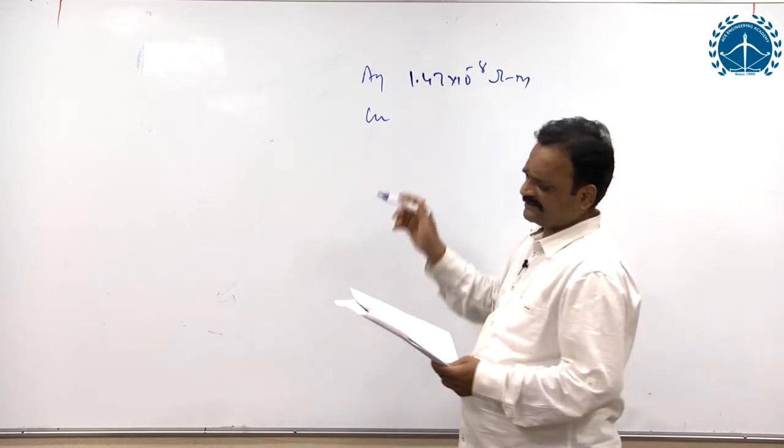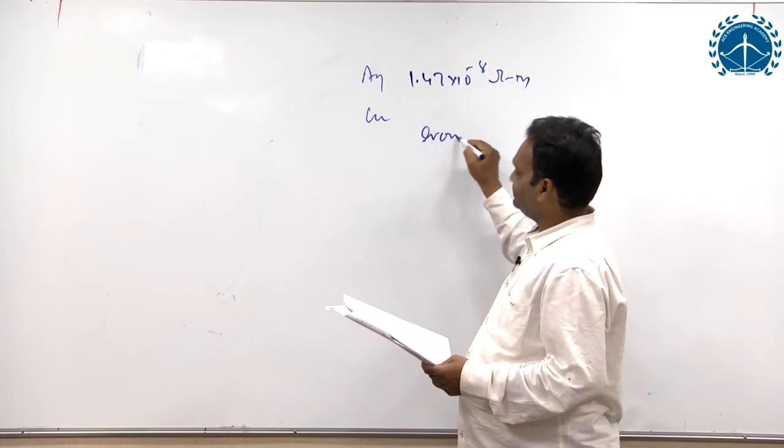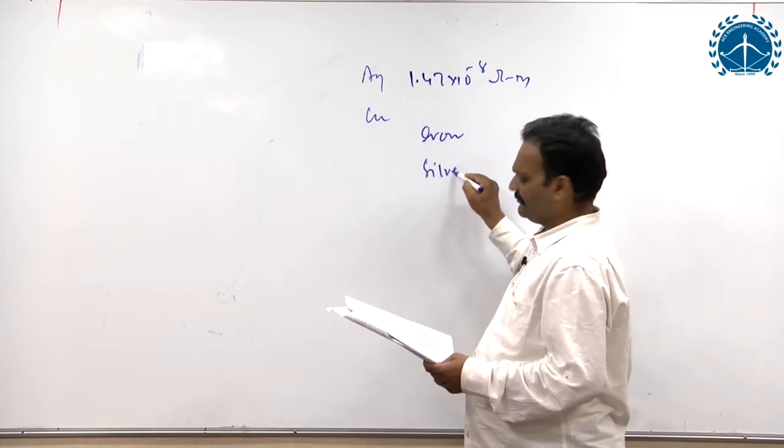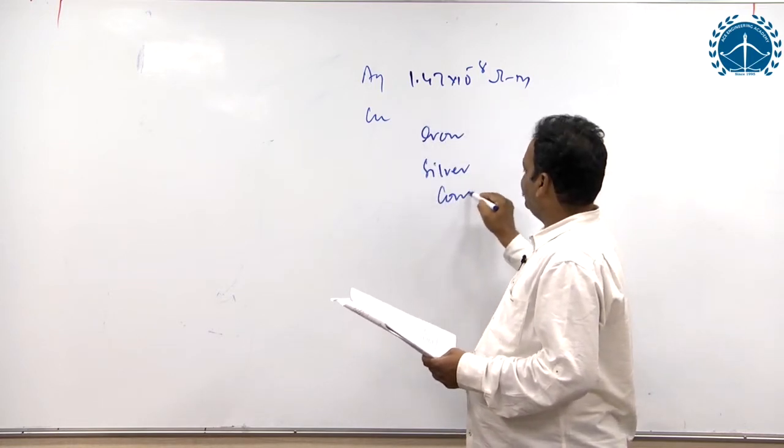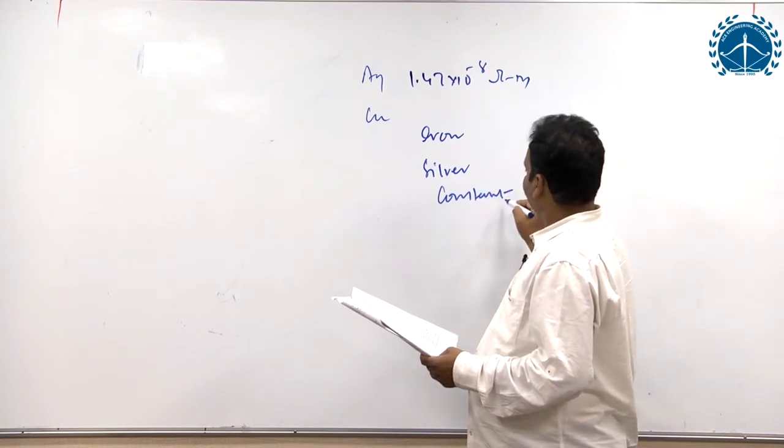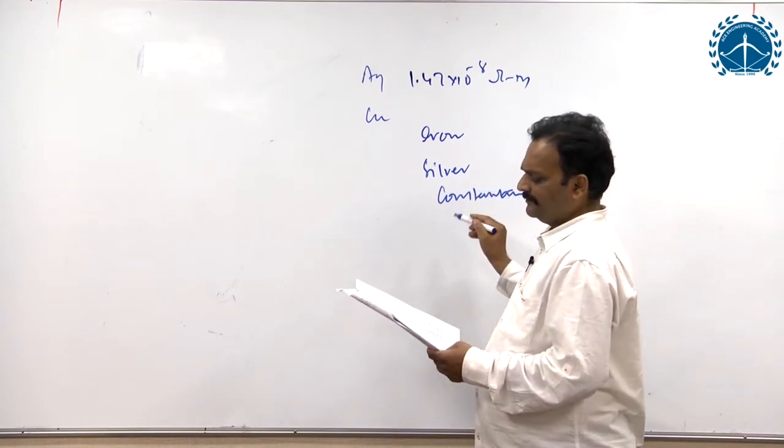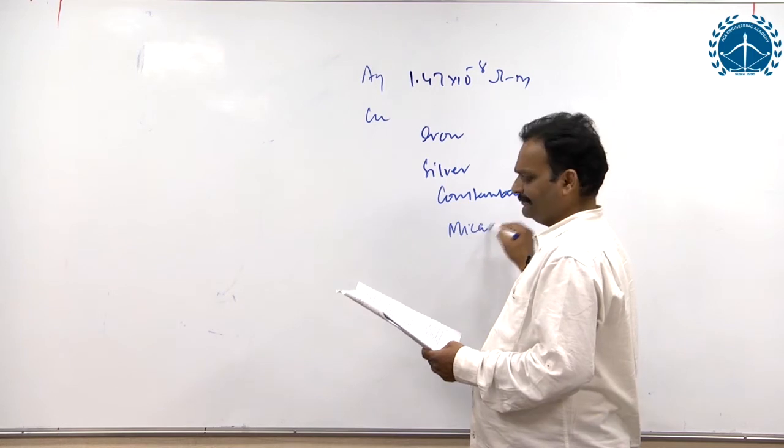So in the given options he has given iron, silver, constantan, mica, and aluminium.